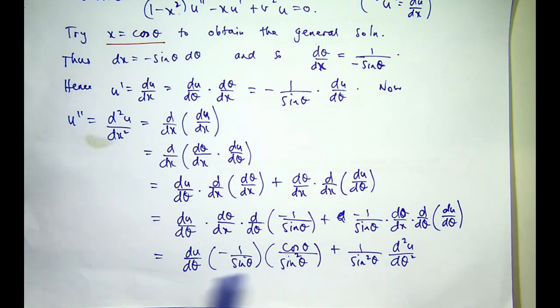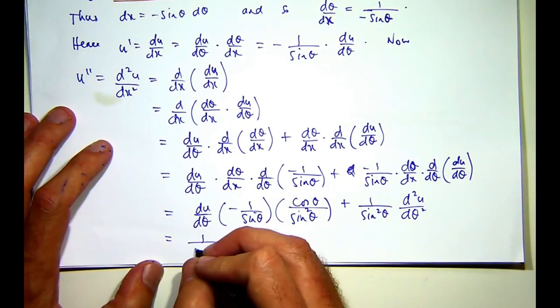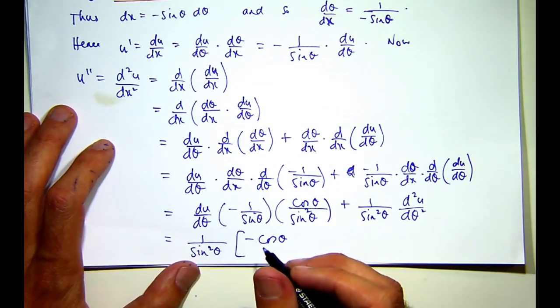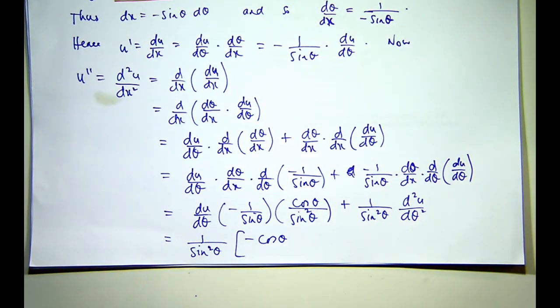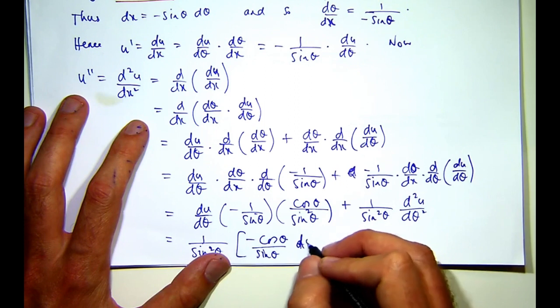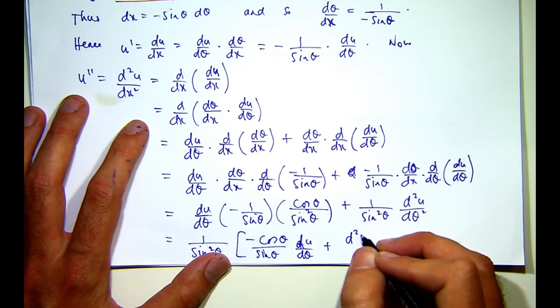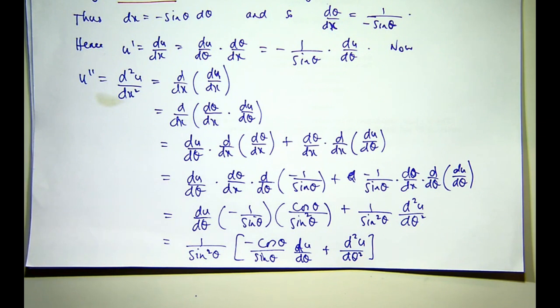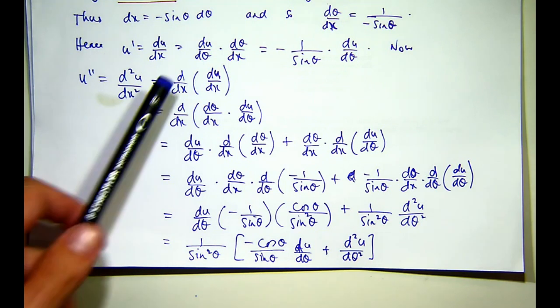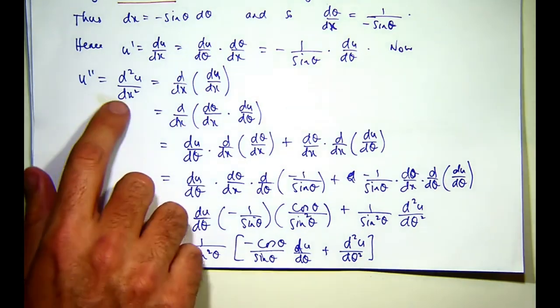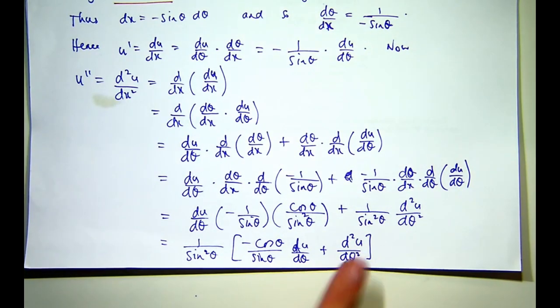Okay, so I can take a, I'm going to take a factor of 1 on sine squared out. So, d u d theta plus d squared u d theta squared. Okay. So, I've got my derivative, my second derivative, d squared u d x squared in terms of d u d theta and d squared u d theta squared.